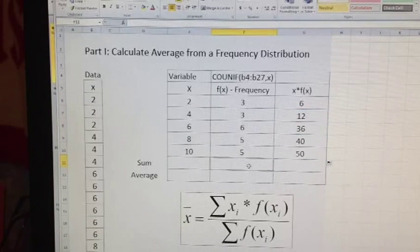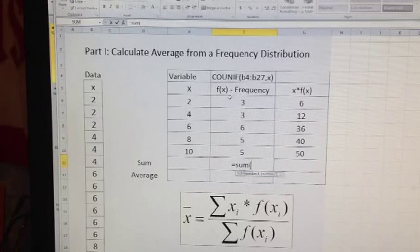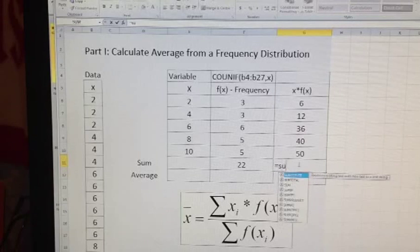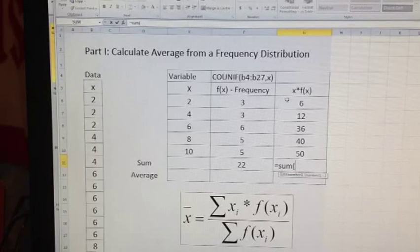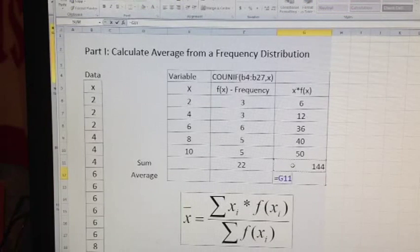Then I need for this formula the sum of all frequencies. So the sum of all frequencies is this, which gives me how many cases I have, 22 cases. And I need the sum of all products of the value and the frequency. And it is 144. So the average according to this formula will be this sum divided by the sum of all frequencies.